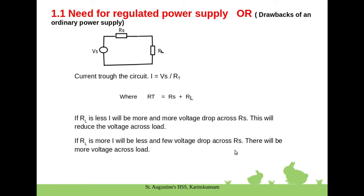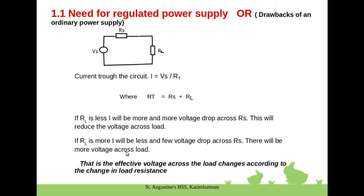When there is a voltage drop across the internal resistance (Rs), the voltage across the load changes. We conclude that the effective voltage across the load changes according to the change in load resistance. In an ordinary power supply, changing the load resistance changes the load current, and therefore the output voltage changes.